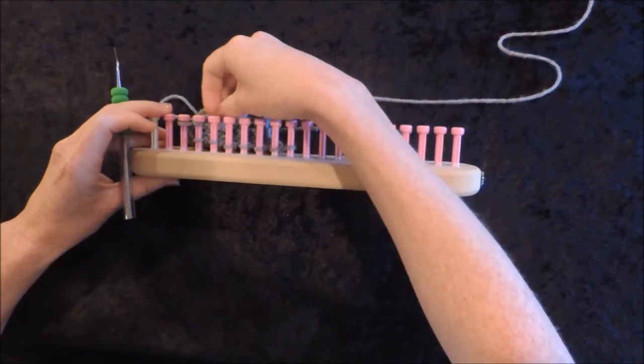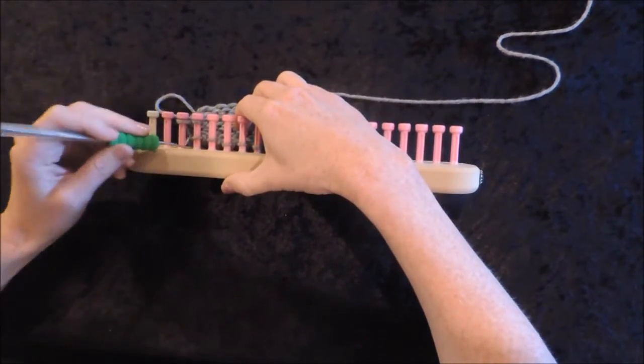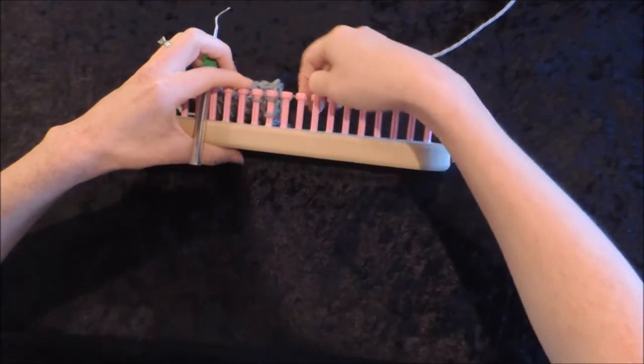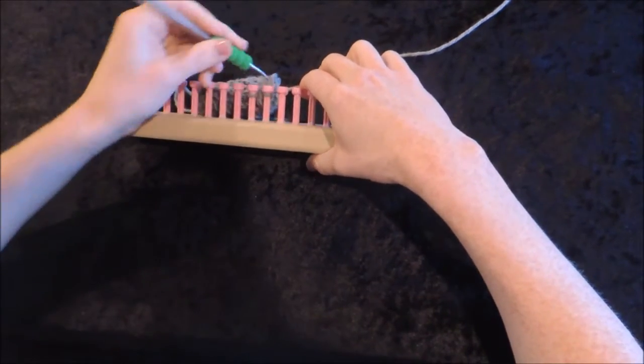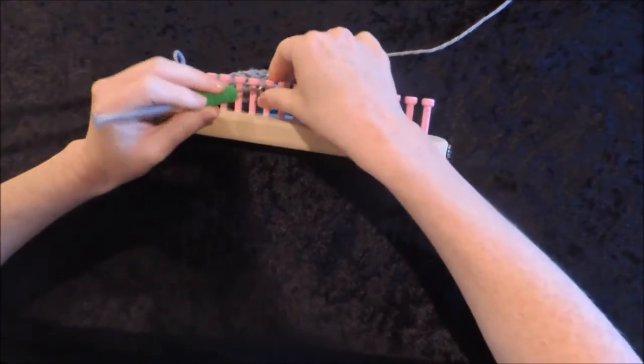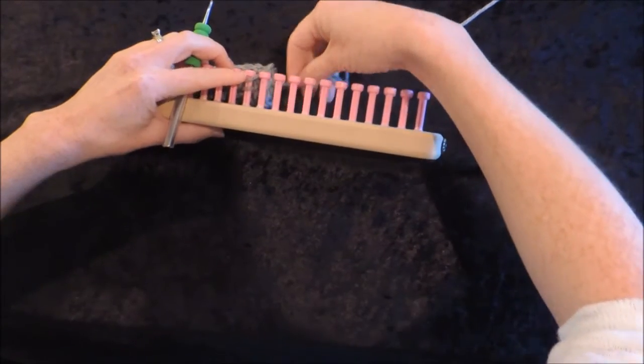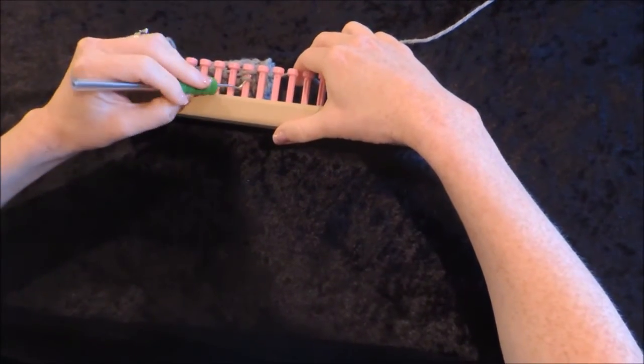And we keep doing that all the way down. Our very last peg, wrapping it around, picking over, moving the last peg to the next last peg. We have 2 loops on there, and we're picking it over.